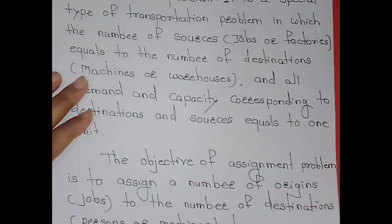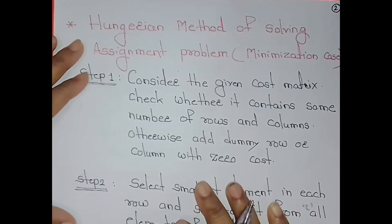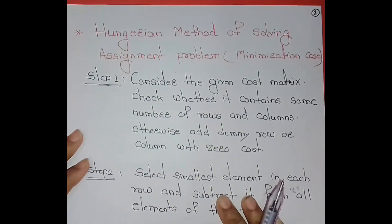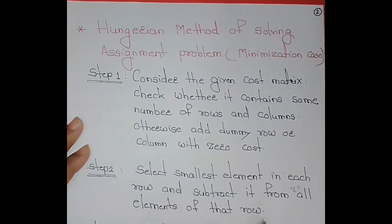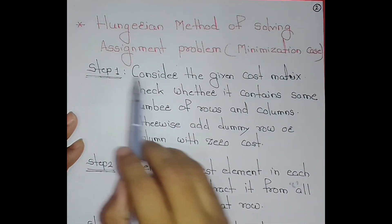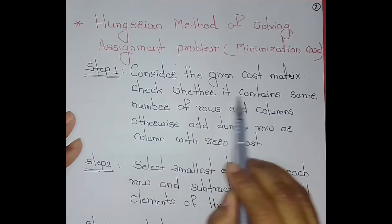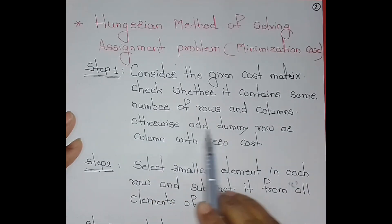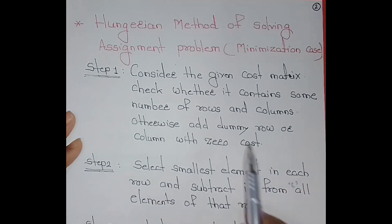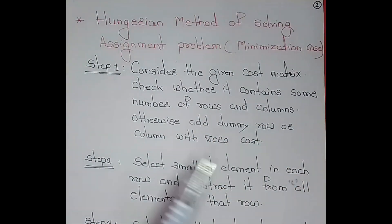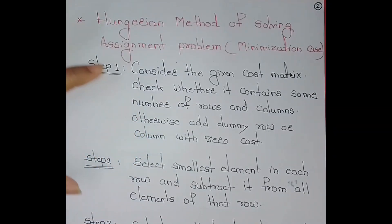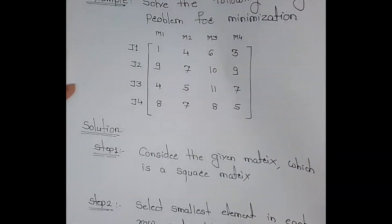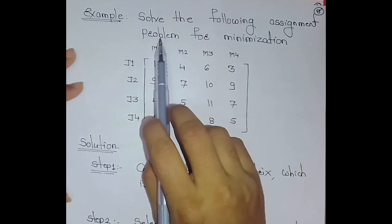Now we will see the Hungarian method of solving the assignment problem — minimization case. Here are the steps of solving the Hungarian method. First step: consider the given cost matrix and check whether it contains the same number of rows and columns. Otherwise, add a dummy row or column with zero cost. We have an example here: solve the following assignment problem with minimization.